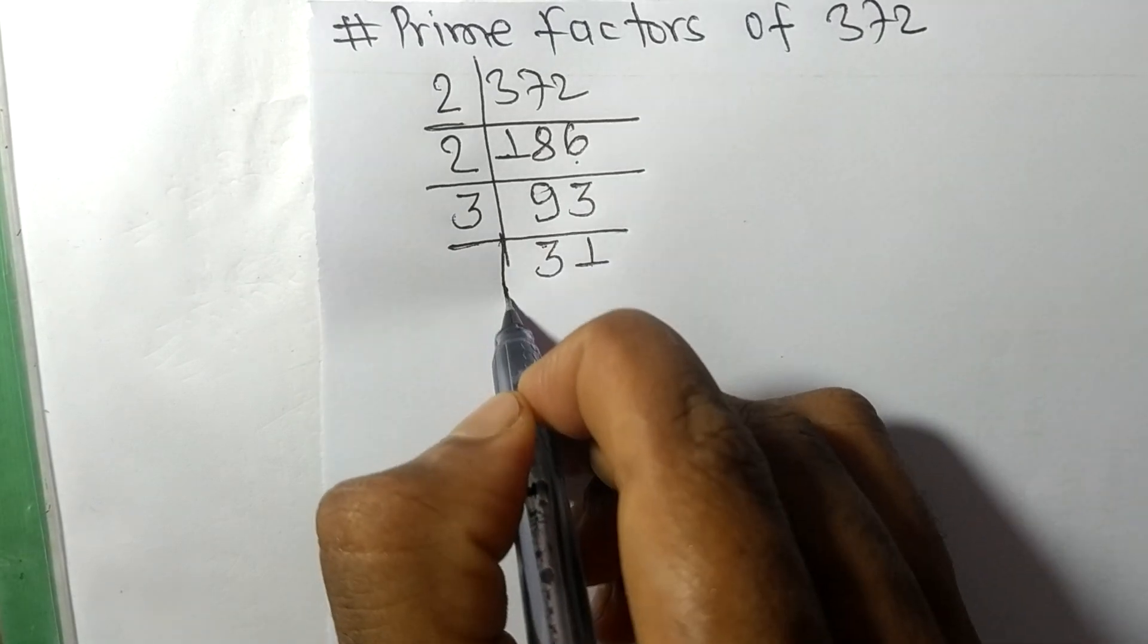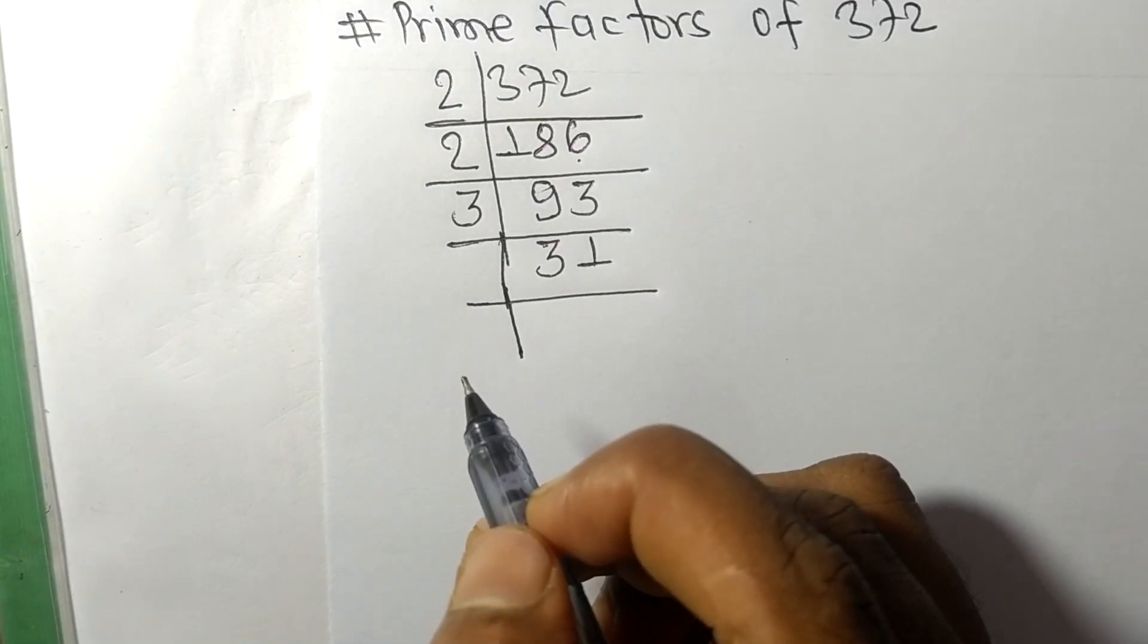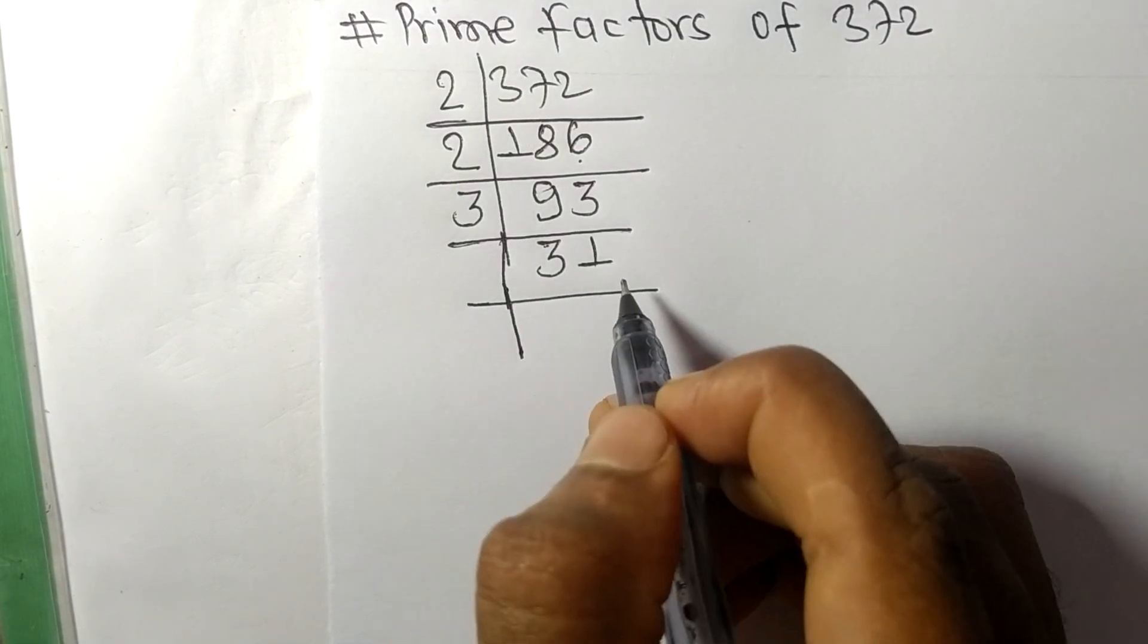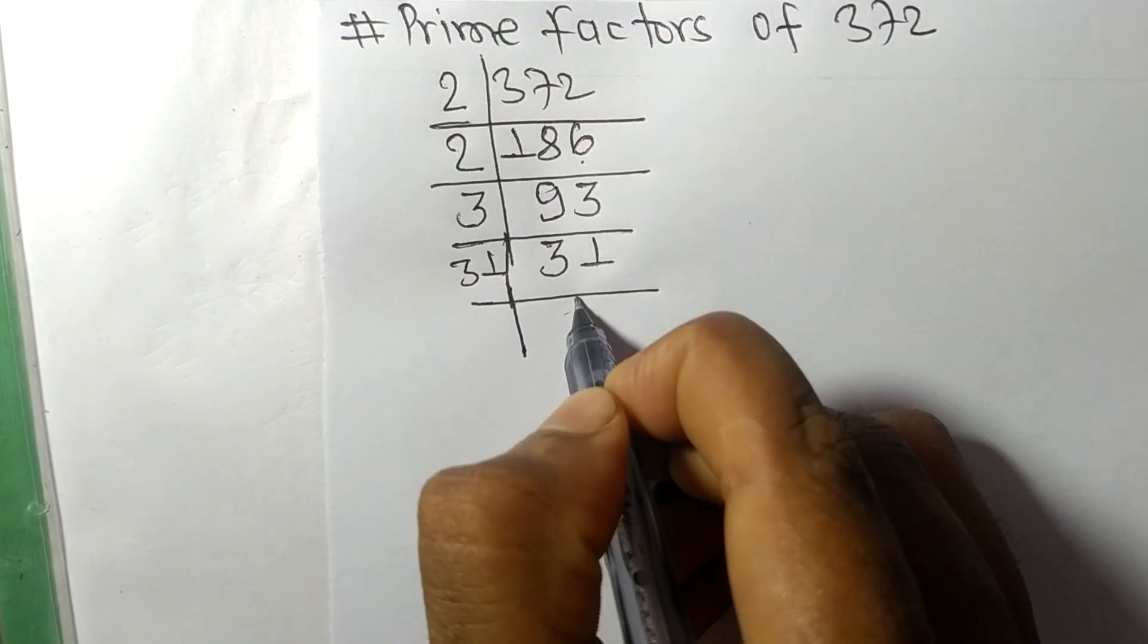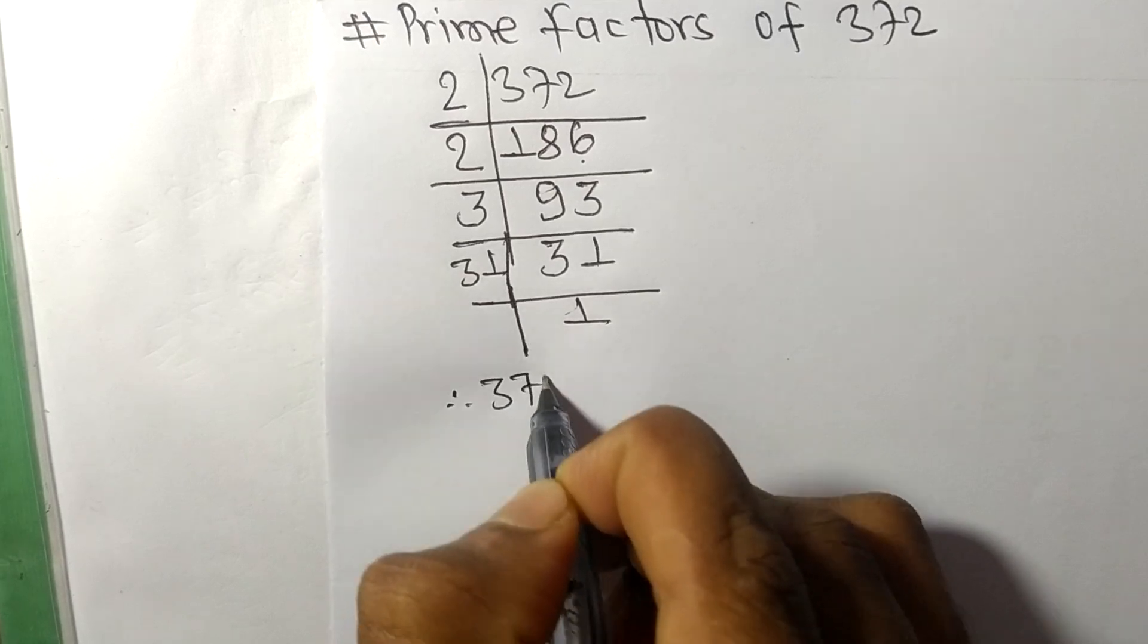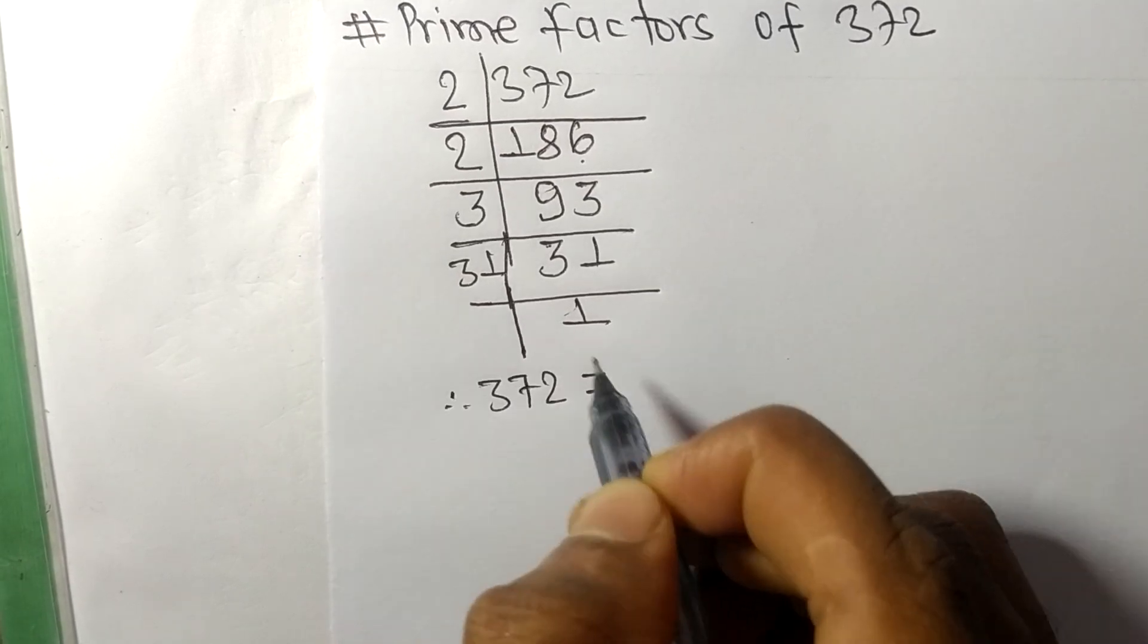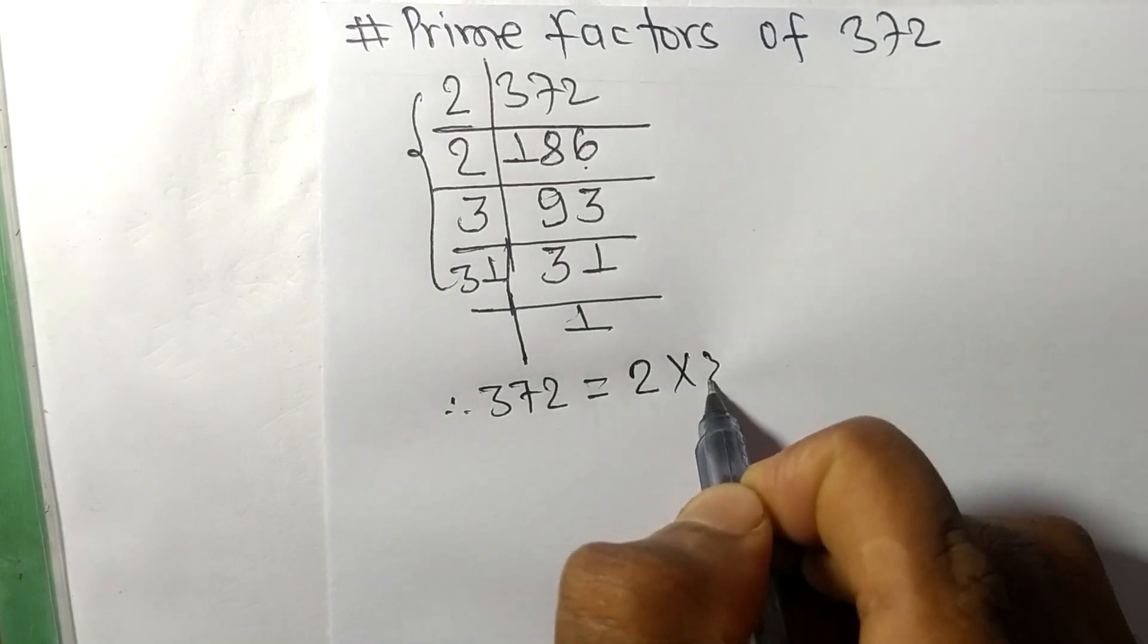Now we got 31 which is our prime number, so it is divisible by 31 itself and we get 1. Therefore, 372 is equal to, from this side, 2 times 2 times 3 times 31.